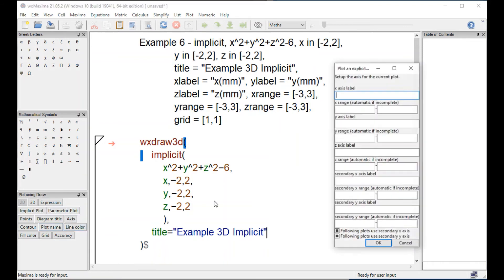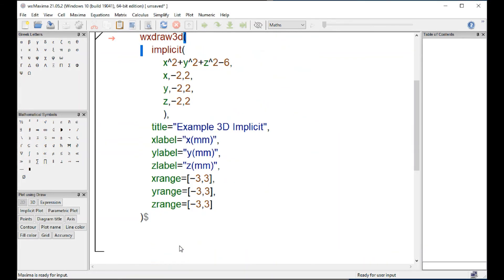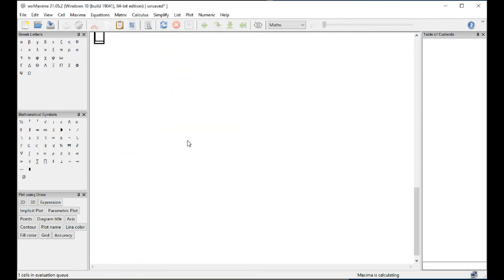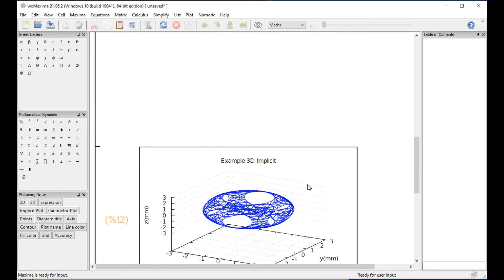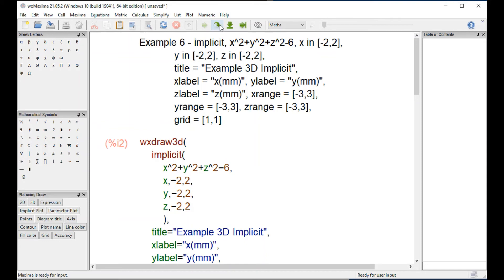And then we go for our axis, x millimeters range from minus 3 to 3, y millimeters minus 3 to 3, z millimeters again from minus 3 to 3, and for the grid we have 1, 1. We're ready. Control, enter, and it render our figure in an implicit manner.